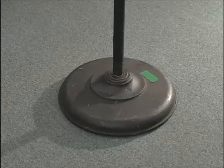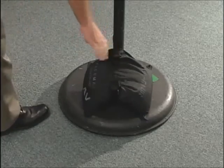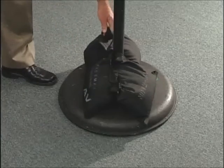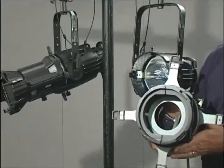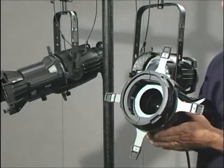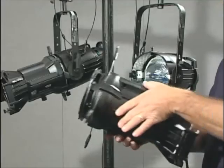Where applicable, secure the trees with sandbags to prevent tipping. Now let's demonstrate focusing the instruments. First, set up the ladder and get your gloves and wrench. Power the key light and make sure all four shutters are completely open.